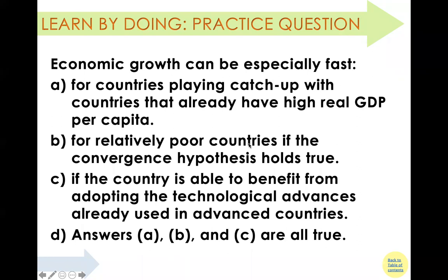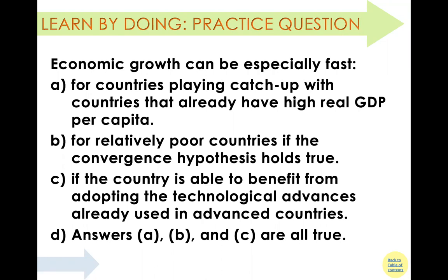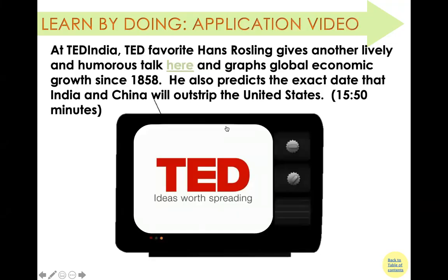Looking at the practice question: economic growth can be especially fast in which scenario? All of options A, B, and C are correct. A: for countries playing catch-up with countries that already have higher real GDP per capita — this reflects diminishing returns to physical capital. B: for relatively poor countries if the convergence hypothesis holds — when countries have similar technology and human capital. C: if a country is able to benefit from adopting technology already used in advanced countries — essentially increasing your technology stock.